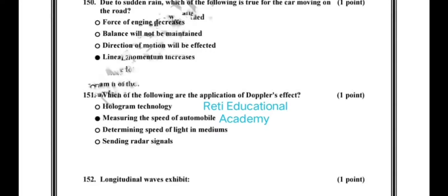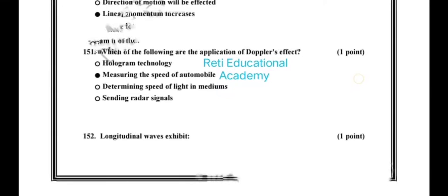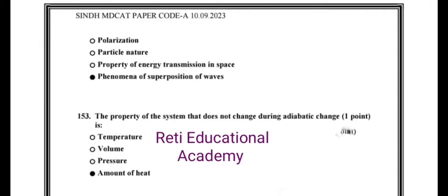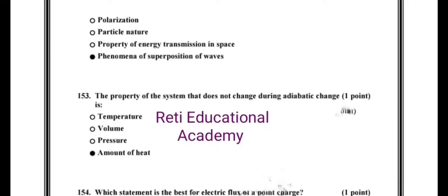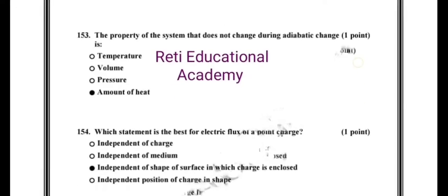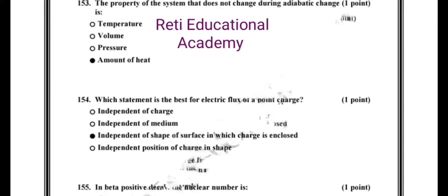Question number 151: which of the following are the applications of the Doppler's effect? The correct option is measuring the speed of an automobile. Question number 152: longitudinal waves exhibit, and the correct option is phenomena of superposition of waves. Question number 153: the property of a system that does not change during an adiabatic change is the amount of heat.